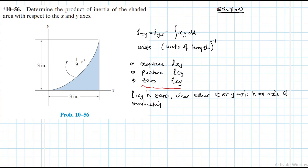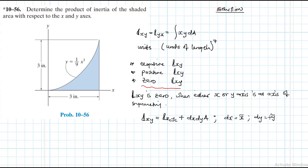For the problems we are dealing with, we will use the parallel axis theorem. The parallel axis theorem gives: I_xy = I_xcyc + dx·dy·A, where I_xcyc is the product of inertia through the centroidal axes, dx is the centroidal offset in x, and dy is the centroidal offset in y.